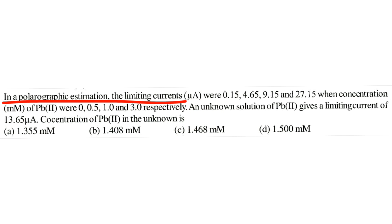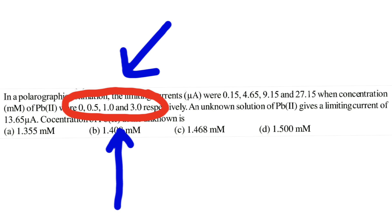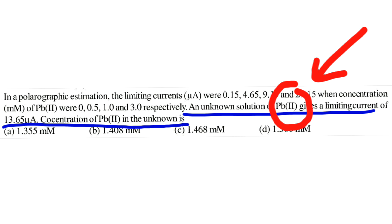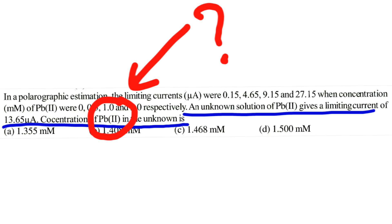In a polarographic estimation, these are the limiting currents when these are the concentrations respectively. An unknown solution of Pb²⁺ gives a limiting current of 13.65 microamperes. Concentration of Pb²⁺ in the unknown is?